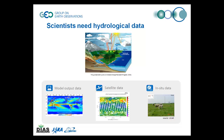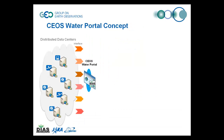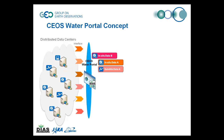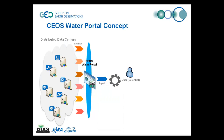Integrating the different types of data enriches the analysis to eventually produce valuable information for people, including decision makers. Scientists need to get data to carry out their model calculations and analysis, but it's usually very time-consuming struggling with different types of services and file formats. CIOS Water Portal aims to provide one-stop service for a variety of hydrological and water-relevant data, in order to support data integration and analysis by users.